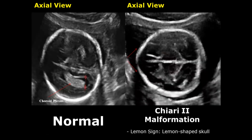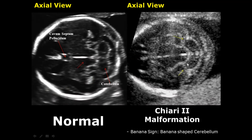Chiari II malformation is associated with characteristic changes in the shape of the skull and cerebellum. The skull resembles the shape of a lemon due to flattening of the frontal bones — this is called the lemon sign. Another sign is the banana sign, associated with the shape of the cerebellum: the cerebellum is shaped like a banana, bent and facing forward.